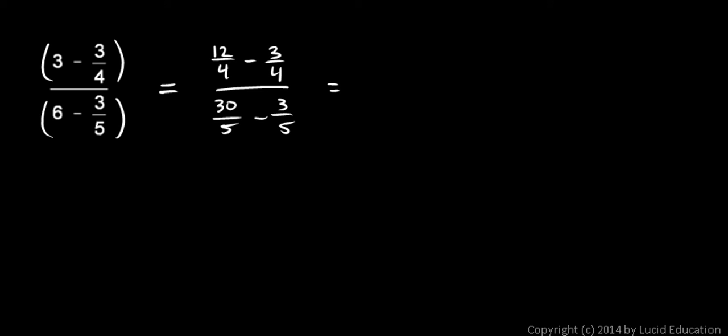Now, up top, 12 fourths minus 3 fourths is 9 fourths. And on the bottom here, 30 fifths minus 3 fifths is 27 fifths.